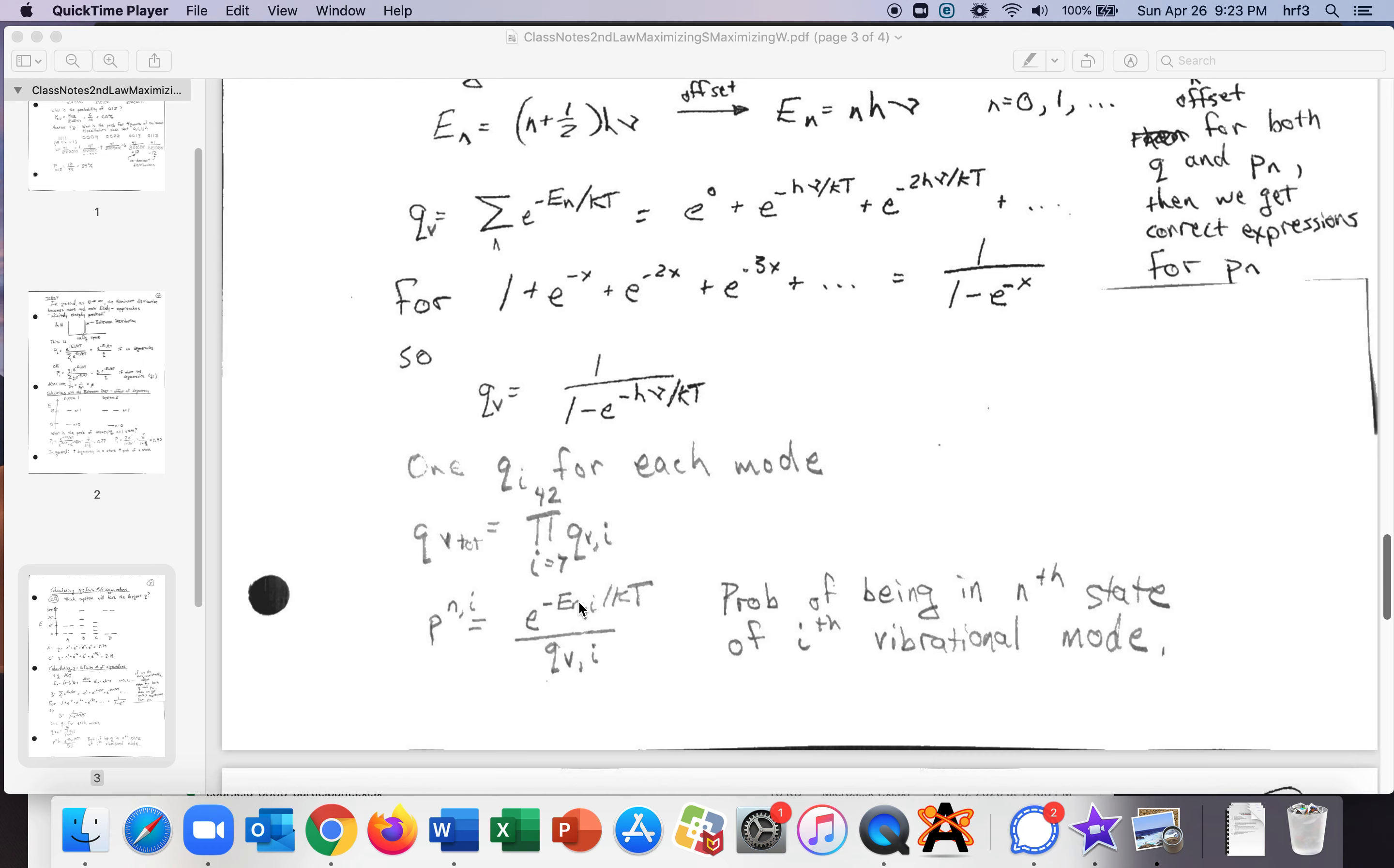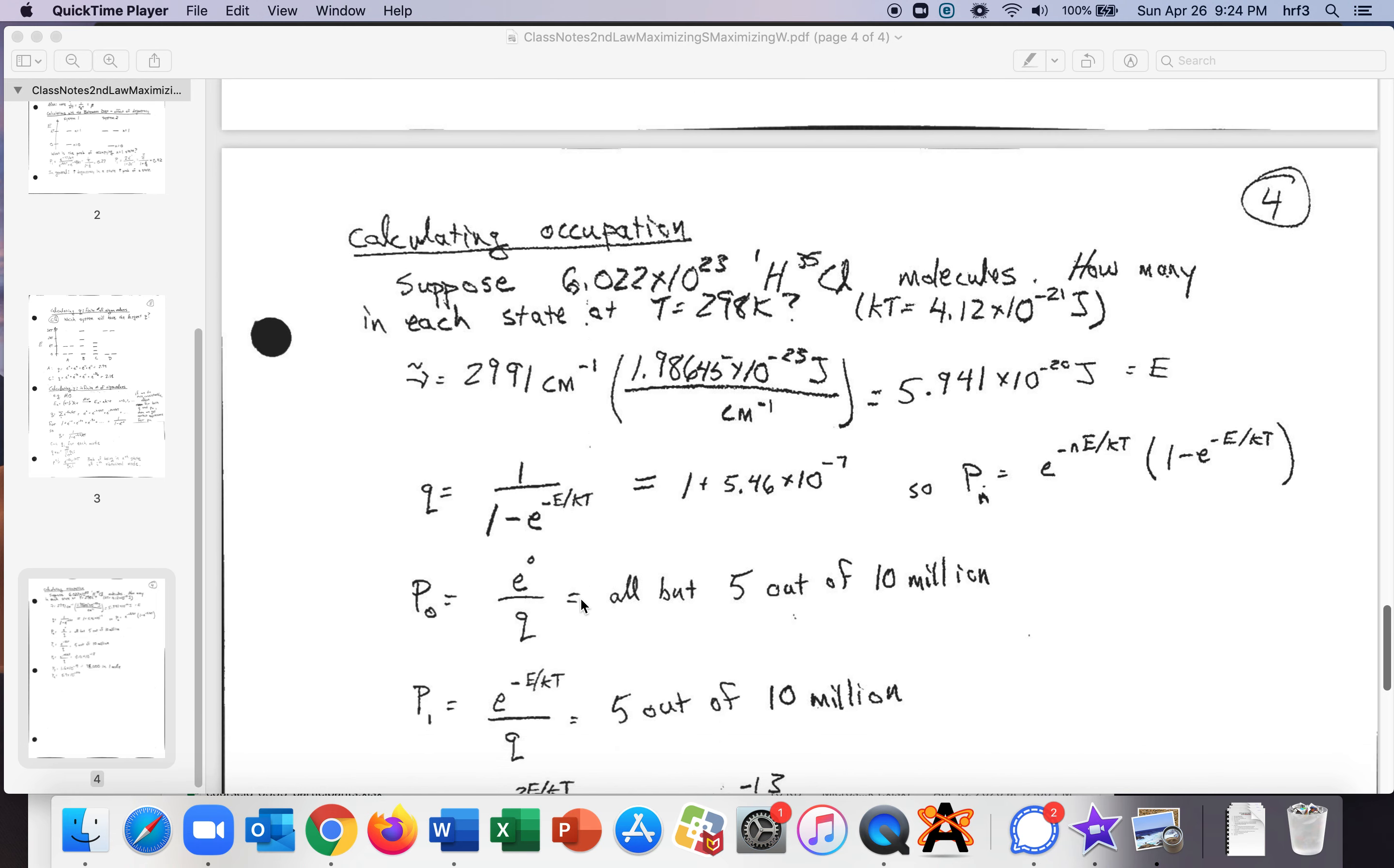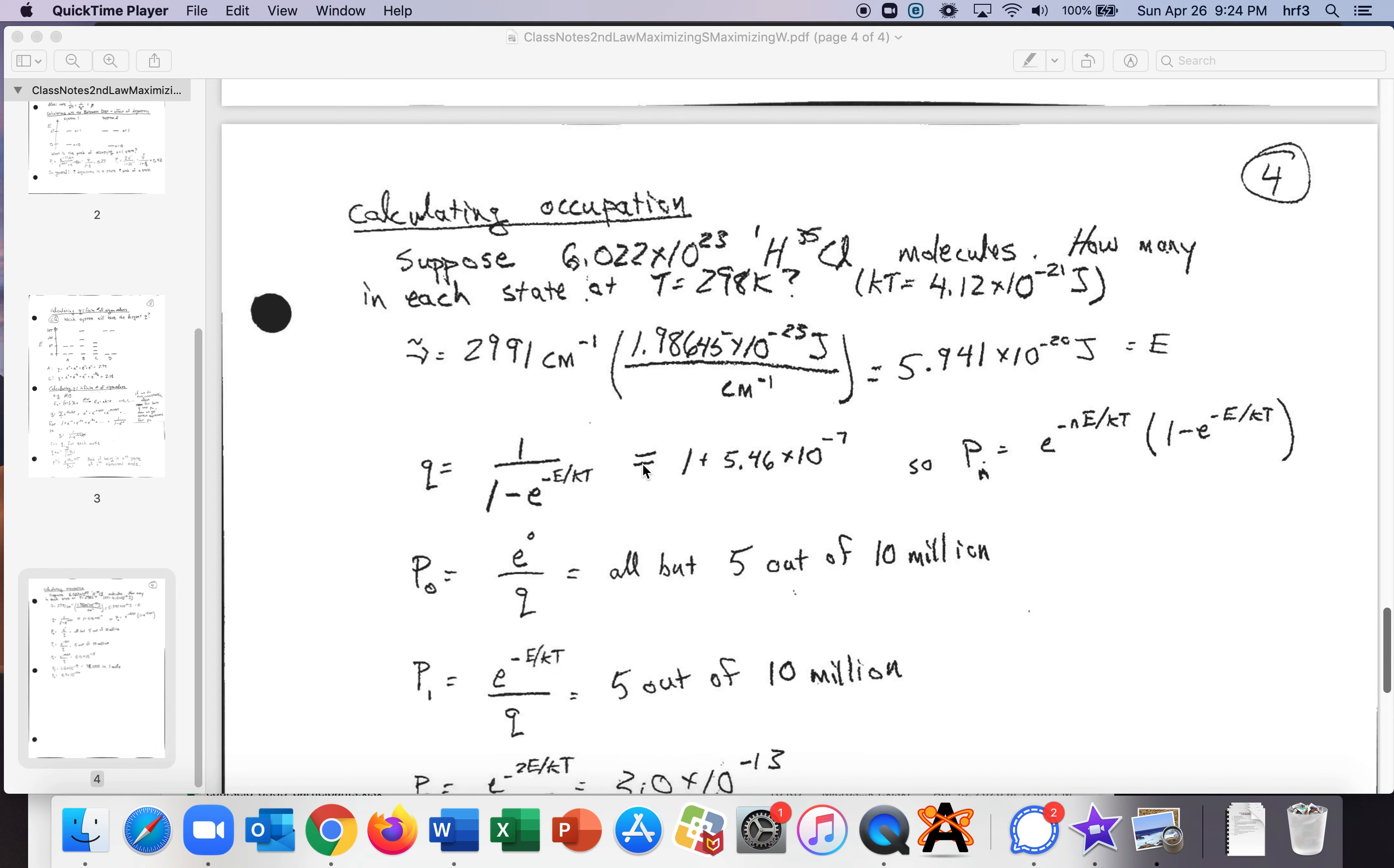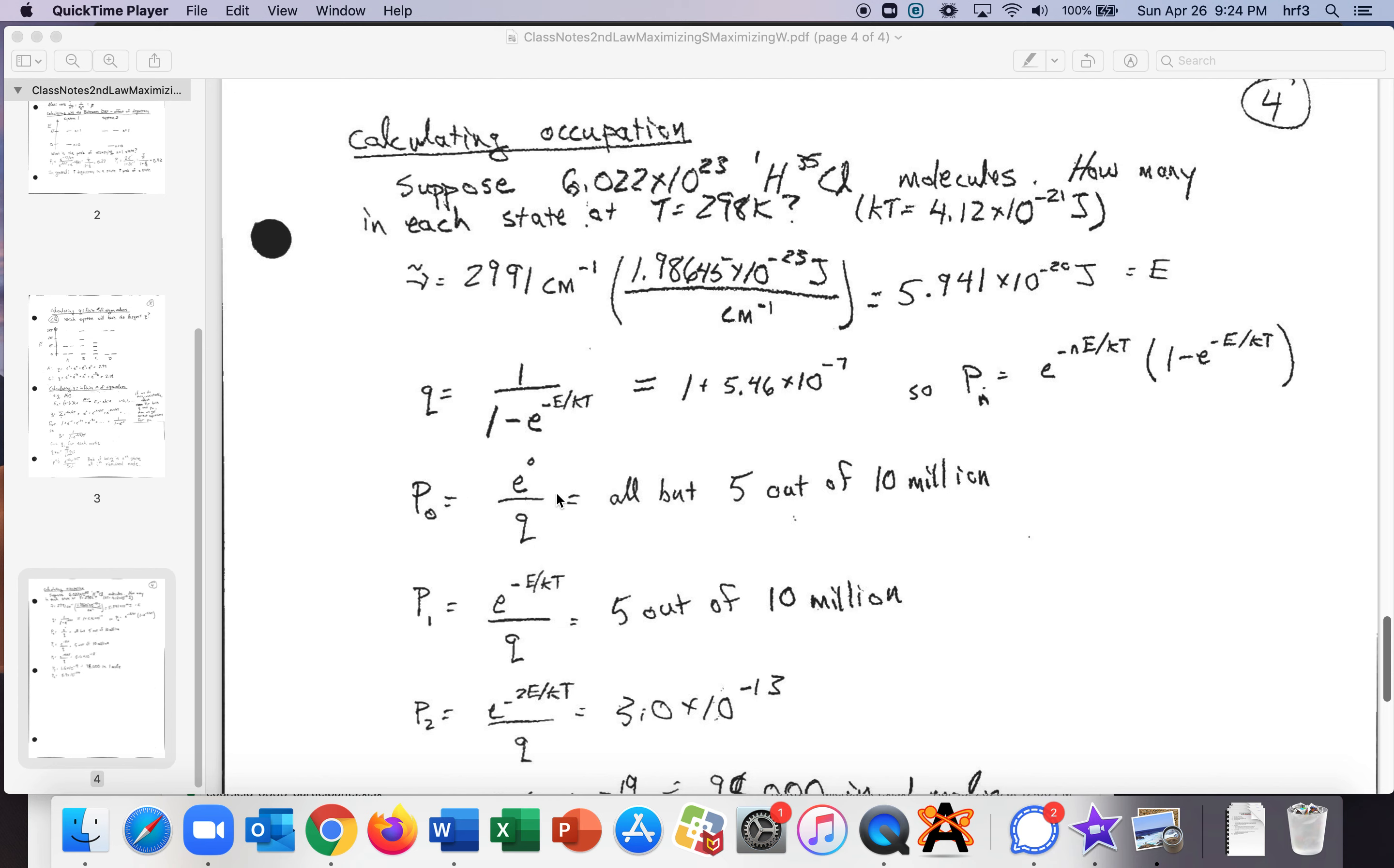Let's talk about calculating the occupation for a specific molecule. So let's say that we had a mole of these hydrogen chloride molecules and we wanted to know how many would be in each state at room temperature. And so at room temperature here's the kt we also know the fundamental frequency and we can convert it into joules so we can easily get the q and then we can get the p0 and you end up with all but 5 out of 10 million. In fact I think we did this if you look back in your notes I think we did this example towards the end of talking about the harmonic oscillator.